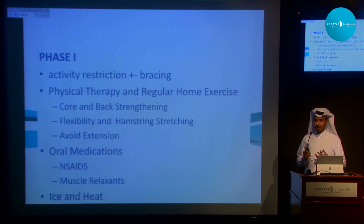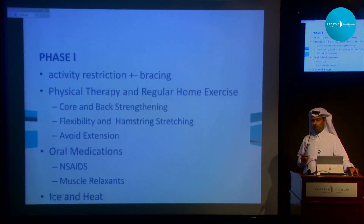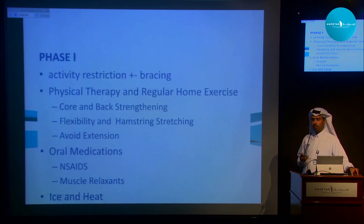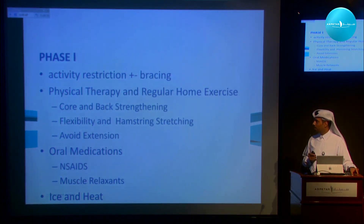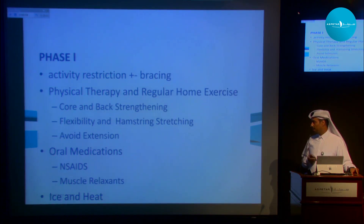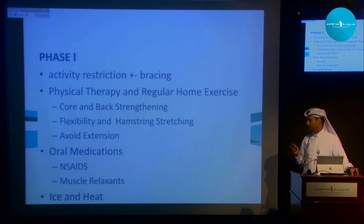Phase one involves activity restriction. Bracing is controversial — I like to give it because it gives patients a sense that something is wrong, making them more cautious and taking things seriously, even if it's not strictly necessary. Physical therapy is extremely important — it is actually the mainstay of treatment. Studies have shown that well-structured training programs will take care of the problem. These comprise core and back strengthening exercises, flexibility, and hamstring stretching. Avoid extension — very important.